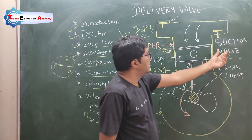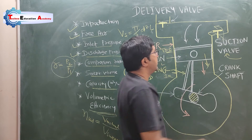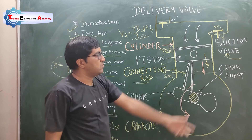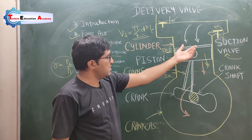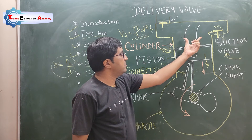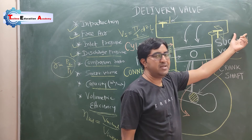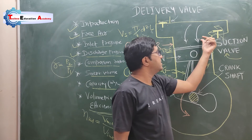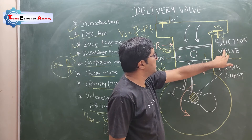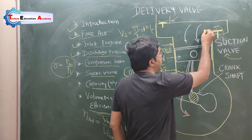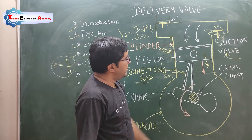Due to this negative pressure, the suction valve (inlet valve) opens and allows air into the cylinder. Since energy always flows from high grade to low grade, the atmospheric air outside the compressor — which is at a higher (positive) pressure than inside the cylinder — is sucked in through the suction valve. You can see the flow of air entering the cylinder. This is called the suction stroke.